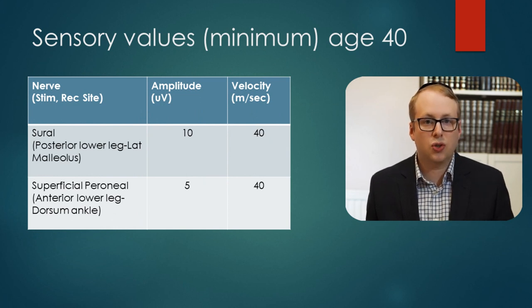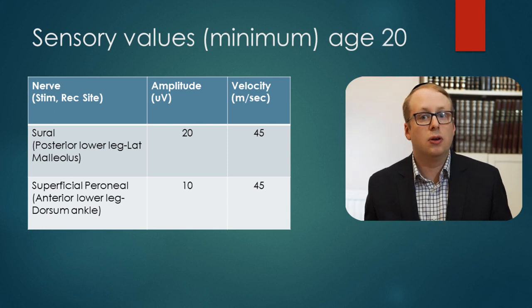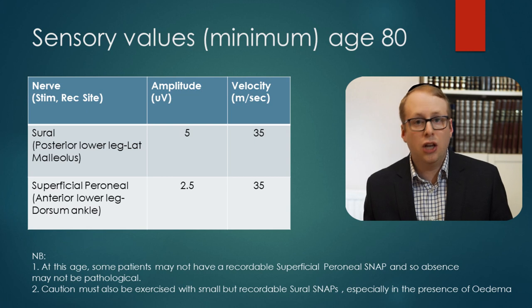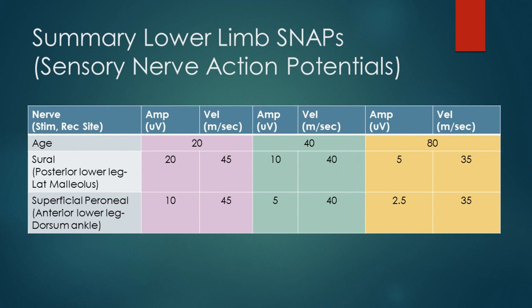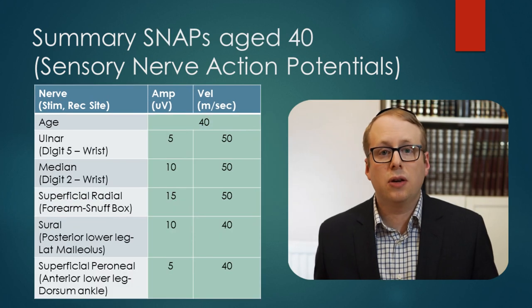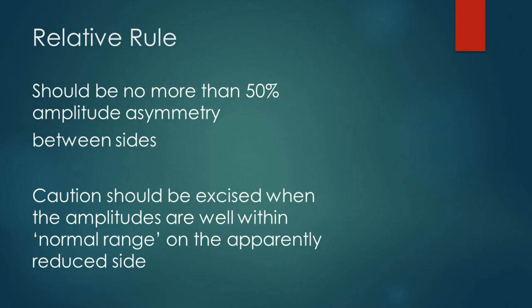In the feet, we tend to routinely measure the sural and superficial peroneal sensory nerve responses. Minimum amplitudes at the age of 40 are 10 and 5 microvolts respectively. At the age of 20, these should be double that — so 20 and 10 microvolts. At the age of 80, you could halve these to 5 and 2.5 microvolts respectively. Because the feet are quite distal, temperatures are lower than in the hand, and so the velocities are always slower than in the hands. This almost never really matters as long as they are above 40 metres per second at 40, and 35 metres per second at the age of 80. We also have a relative rule, which is that the amplitudes of a nerve response from one side should not be more than 50% different to the corresponding response on the other side.